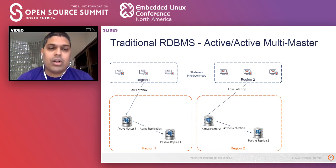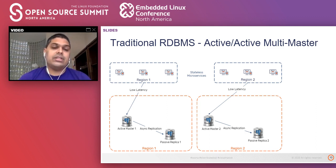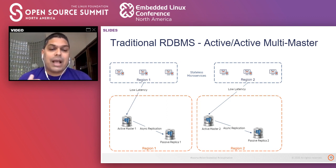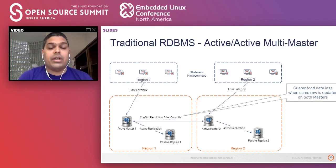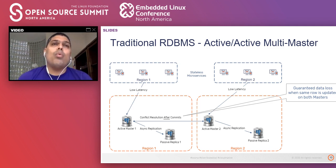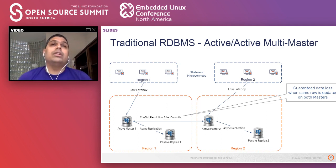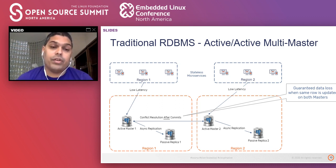The second architecture, which is also becoming common, is known as active-active or multi-master architecture, where we create two full copies of the database. Active master one and active master two have the same data — copies of each other. Passive replicas are present to tolerate the loss of a master in that particular region. We then add bi-directional asynchronous replication. If we update the same record on both sides, last writer wins, meaning one of those two writes will actually be lost forever.